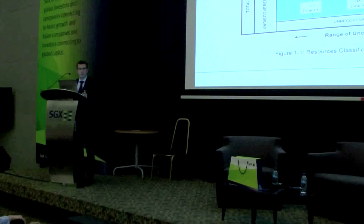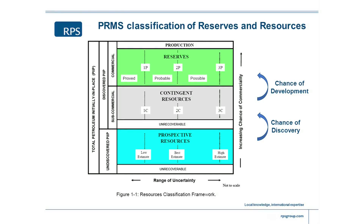I want to return briefly to the PRMS classification of reserves and resources. We use this diagram a lot because it effectively defines what reserves and resources are all about. In green, we've highlighted the reserves — those are the barrels of oil or volumes of gas that are discovered and either in development or in production. In grey, we have contingent resources — volumes of hydrocarbons that have been discovered but are yet to be developed. Some may never get developed, but a large proportion will pass through that grey area and become green eventually.